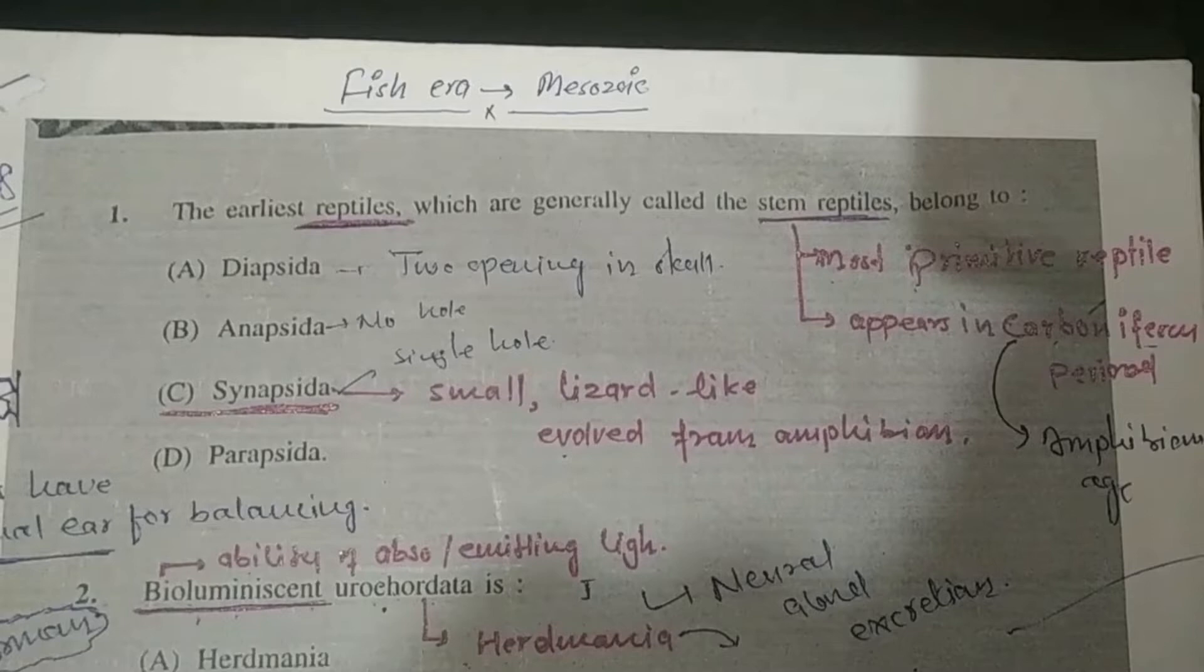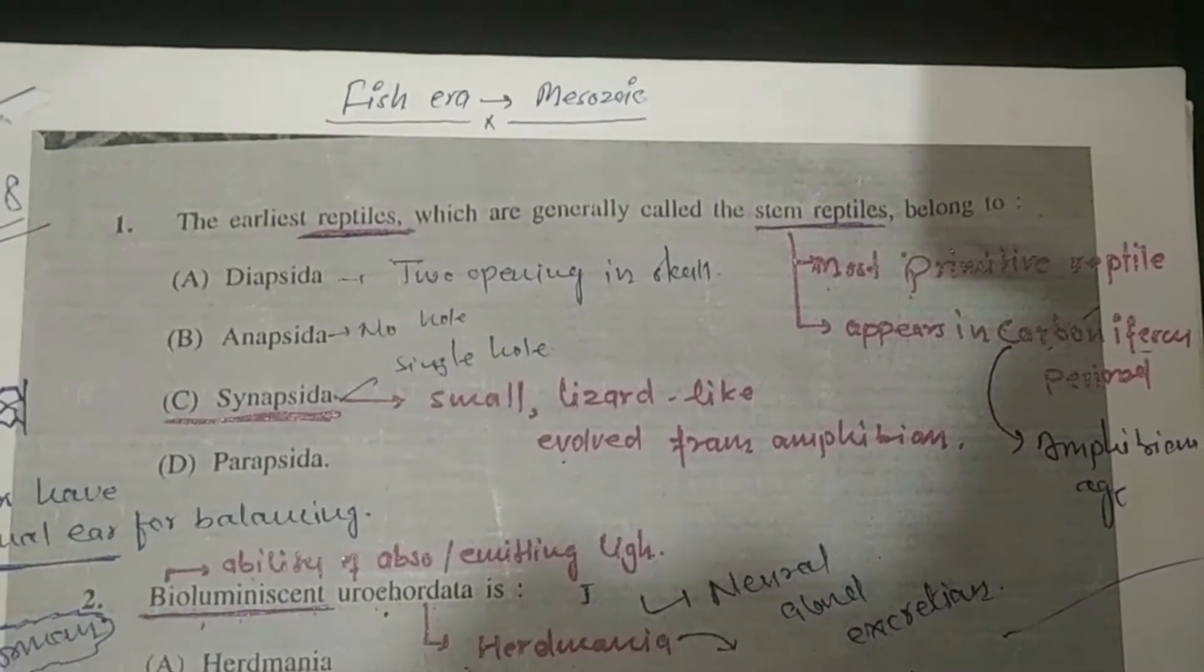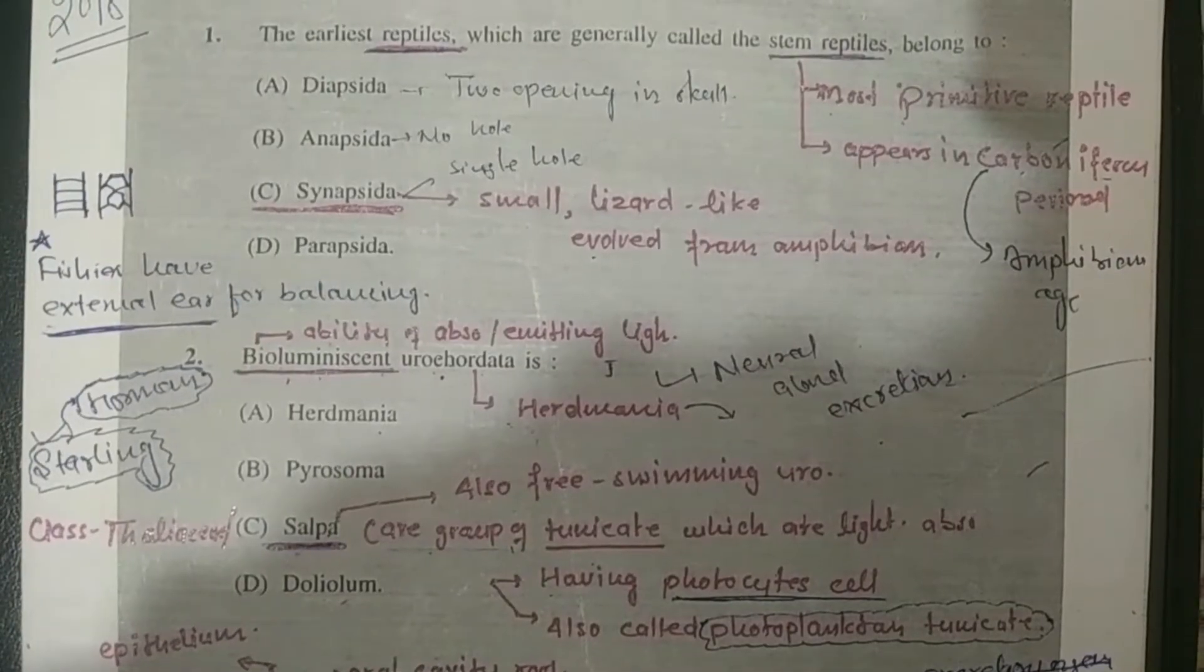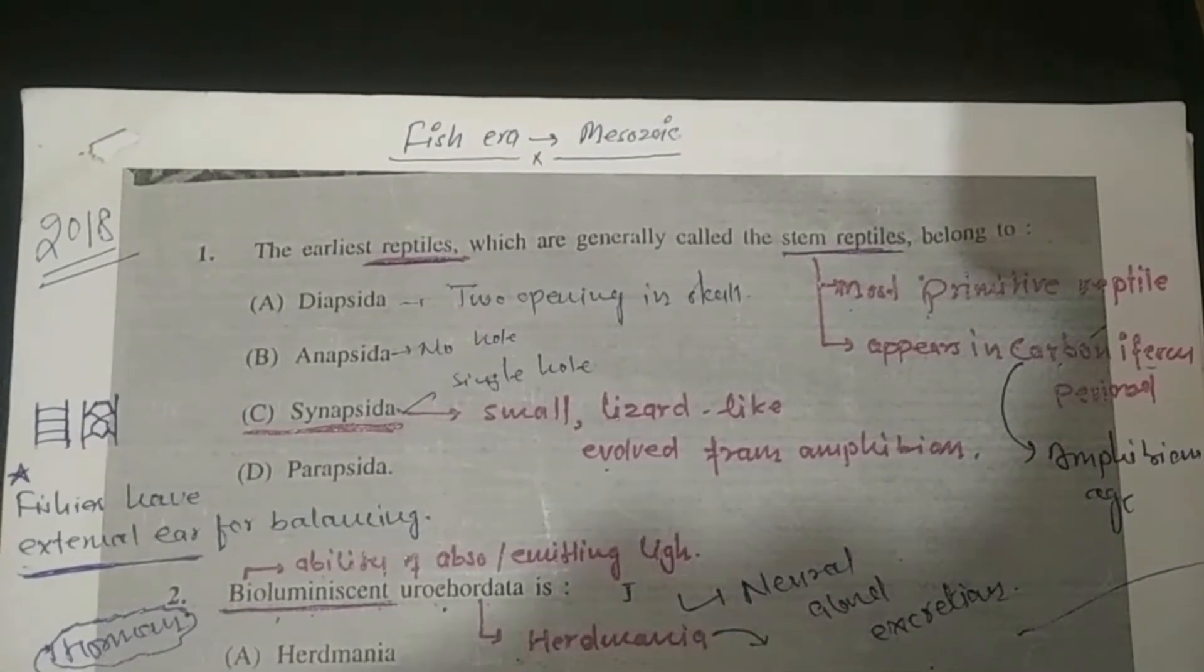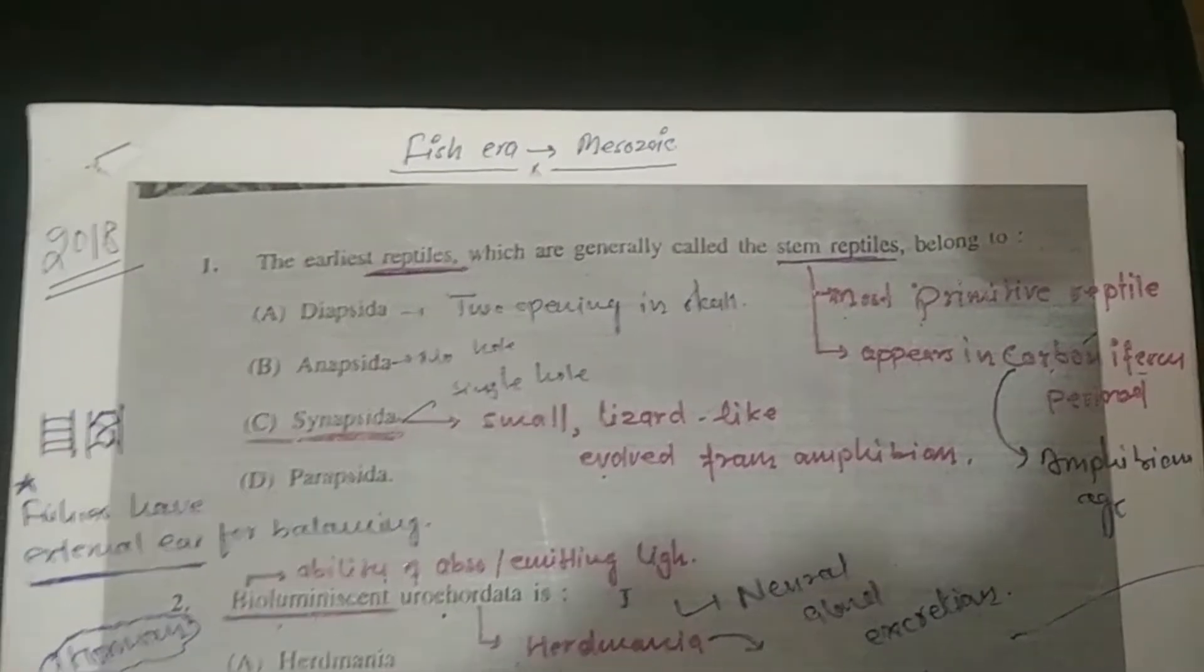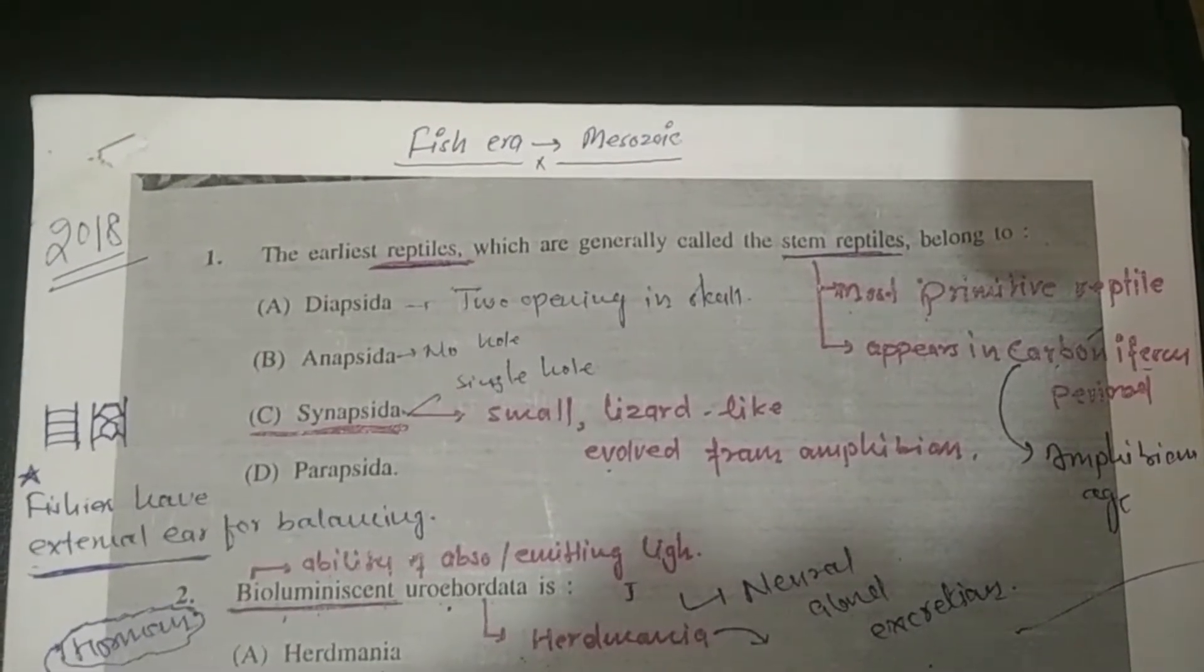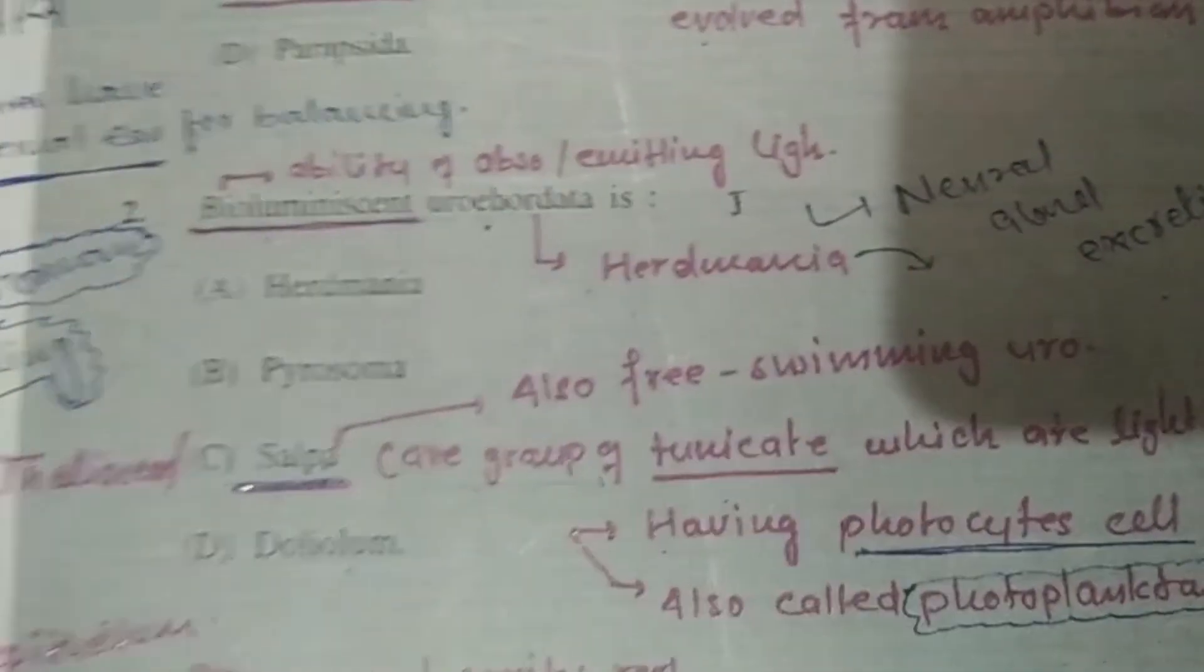Question 1: The earliest reptiles which are generally called stem reptiles belong to - First, what are stem reptiles? They are most primitive reptiles appearing in the Carboniferous period, known for amphibians. We have four options: Diapsida, as the word suggests, two openings in skull; Anapsida, no hole in skull; Synapsida, a single hole, small lizard-like evolved from amphibia. Therefore the answer is Synapsida.